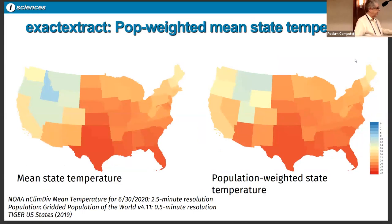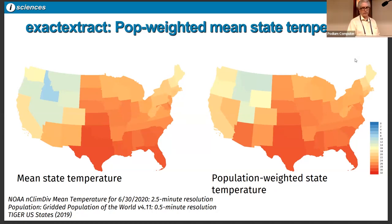To give some examples: we can use exact_extract to compute mean state temperature on the left, or we can look at the population-weighted state temperature on the right. While the overall pattern is somewhat similar, you can see Idaho warms up because all the population in Idaho is in the south. Georgia lightens up. Where the population lives is really important for a lot of our work.